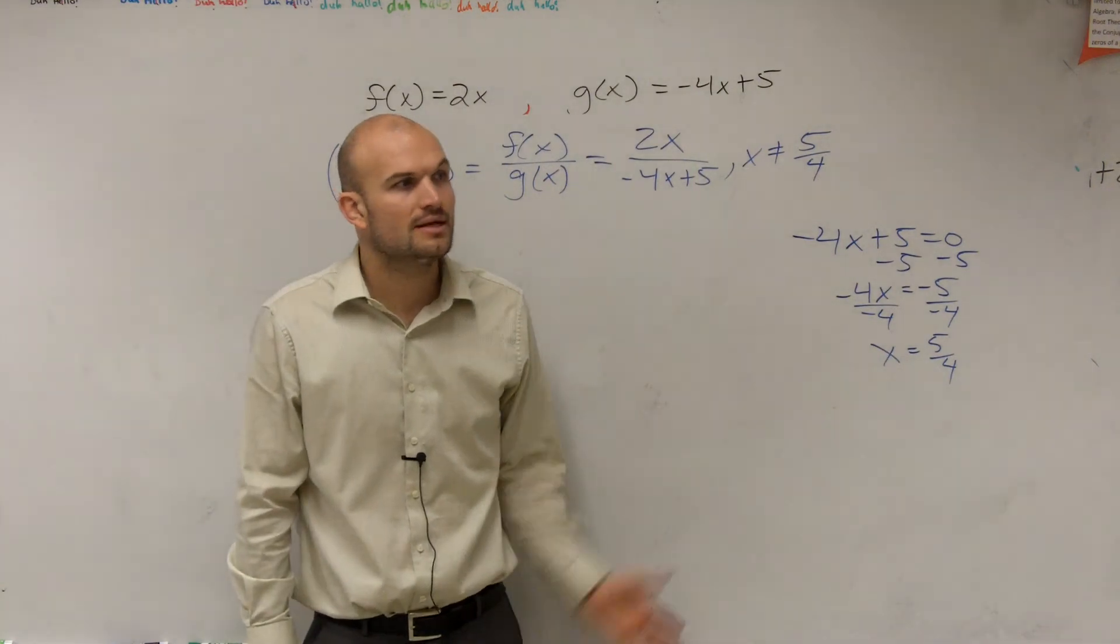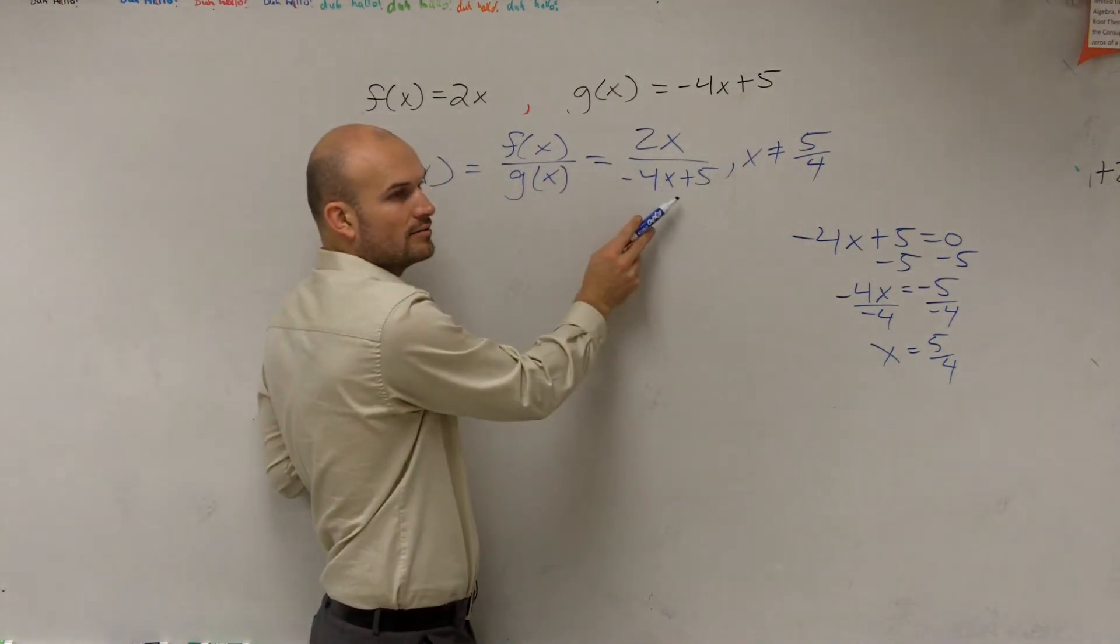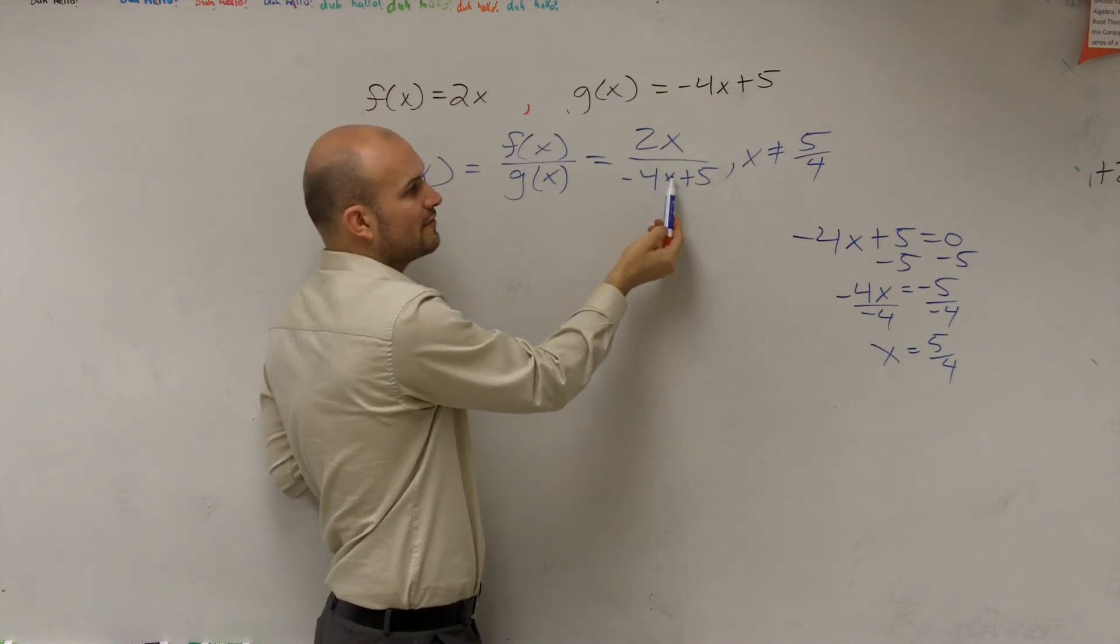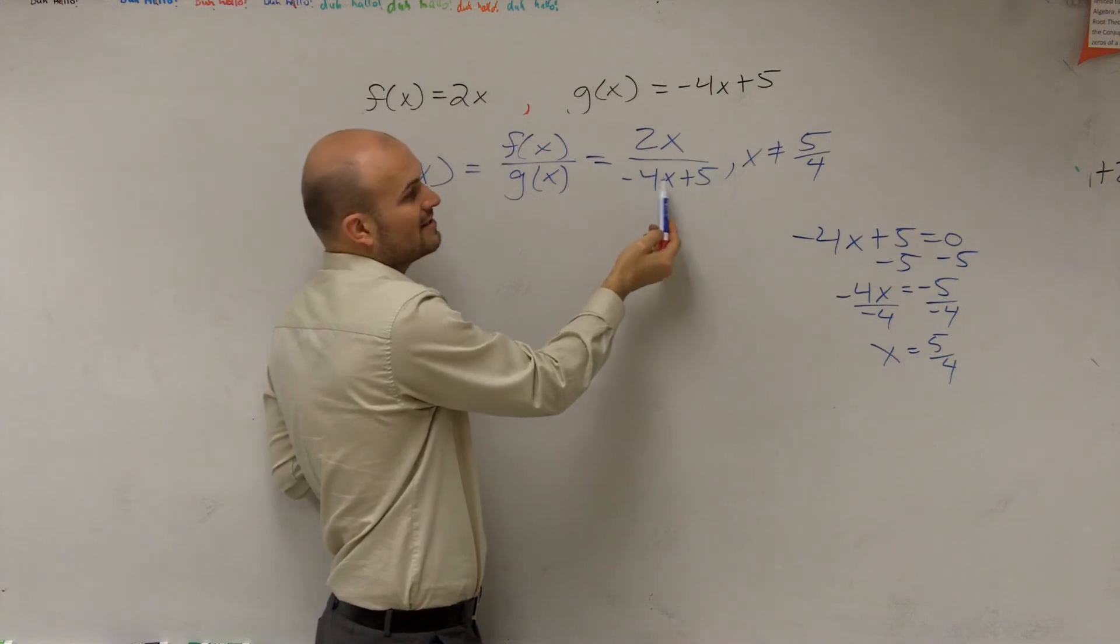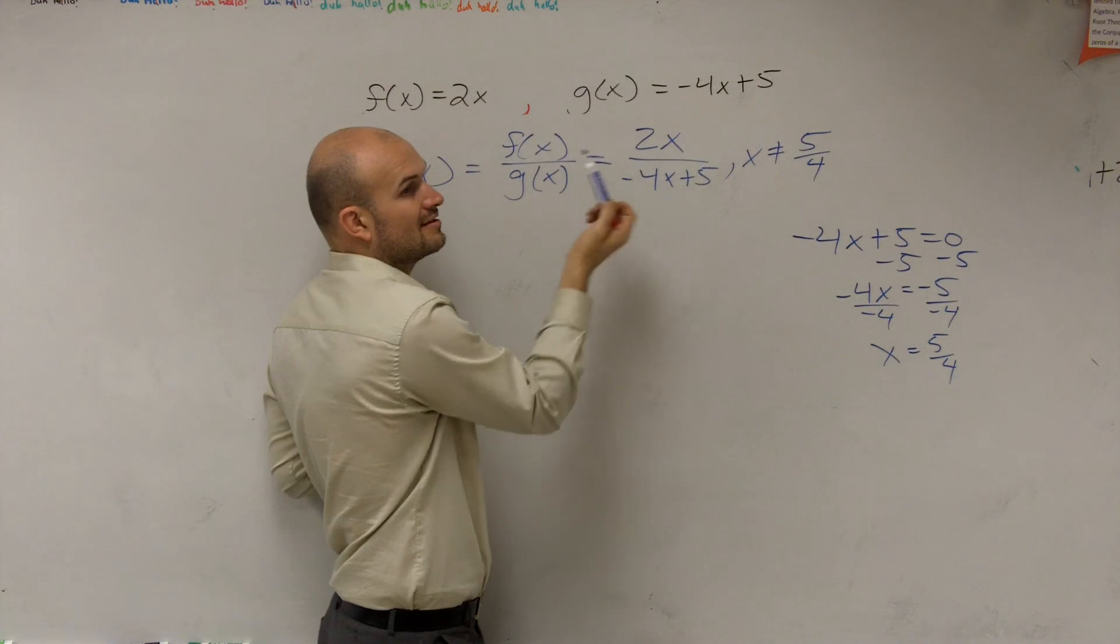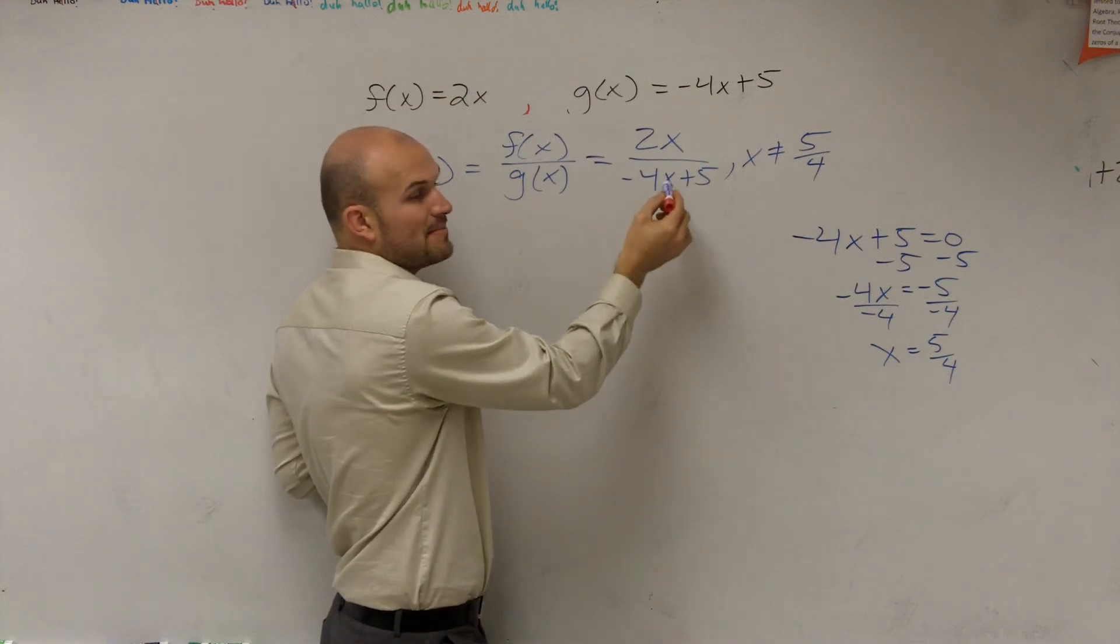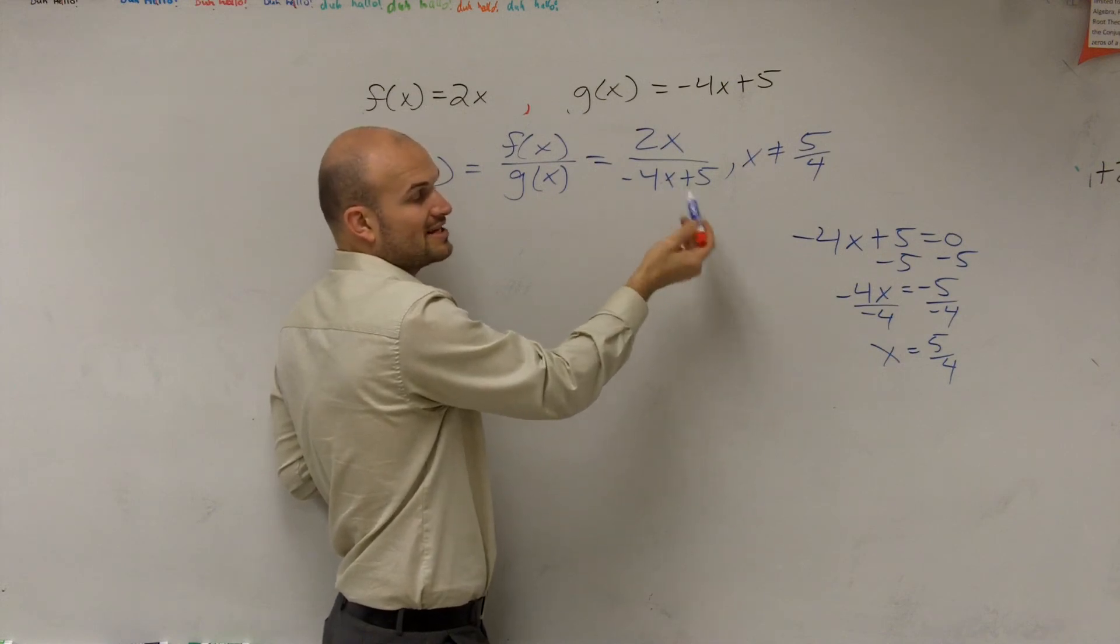So why do you do that? Because let's take a look at it. What if x does equal 5 over 4, right? What if it does? What happens? 5 over 4 times negative 4 is going to leave you with a negative 5. Negative 5 plus 5 is 0. So when x equals 5 over 4, that makes my denominator 0, which it cannot be 0, right? Because we just said we can't divide by 0.